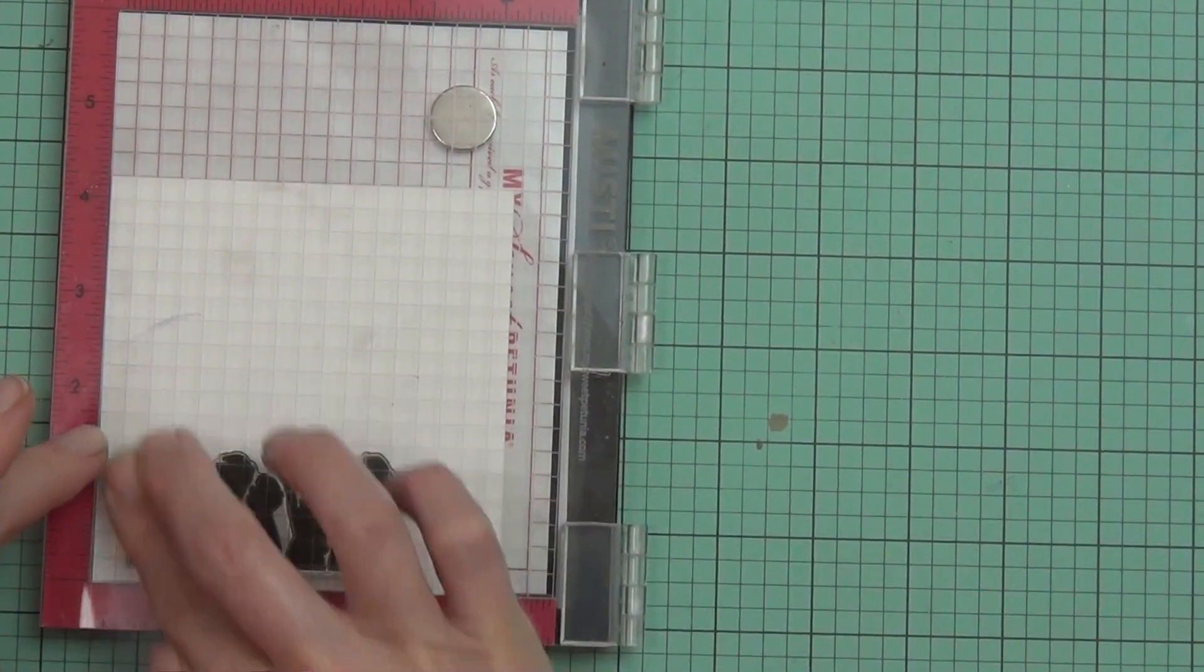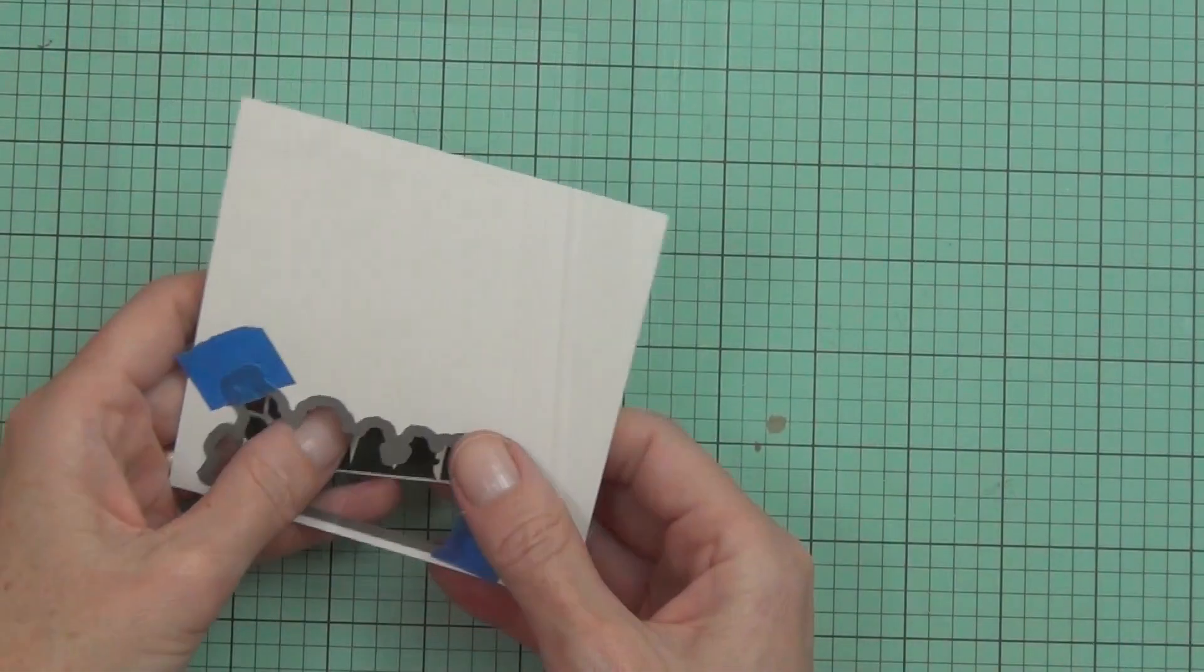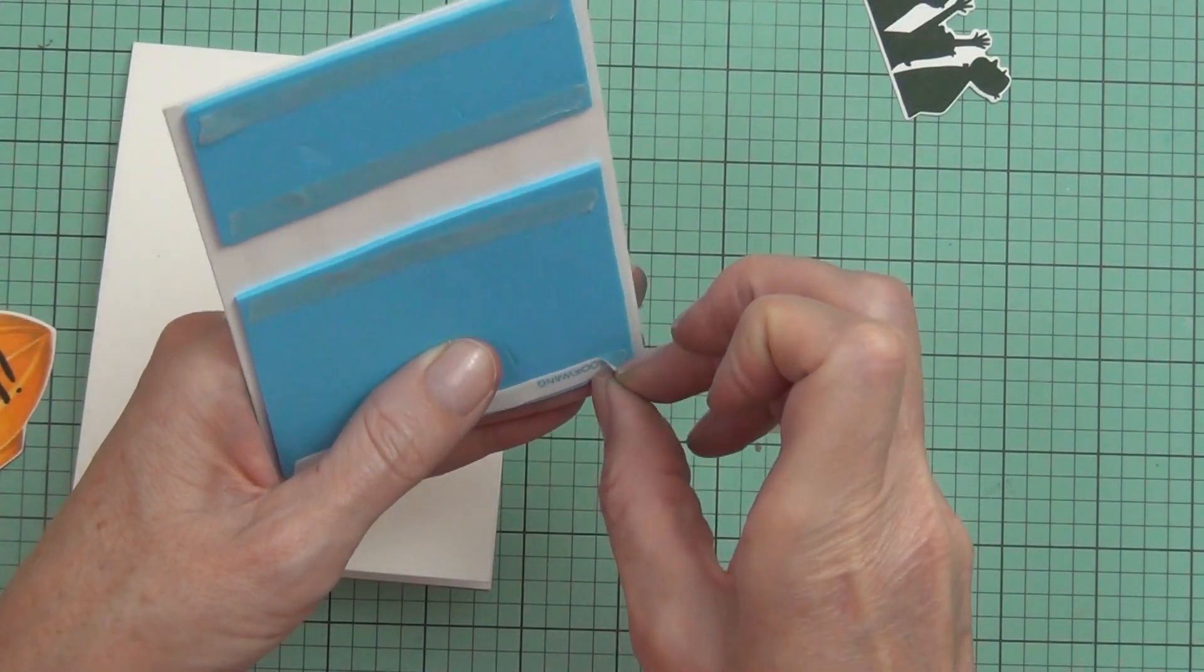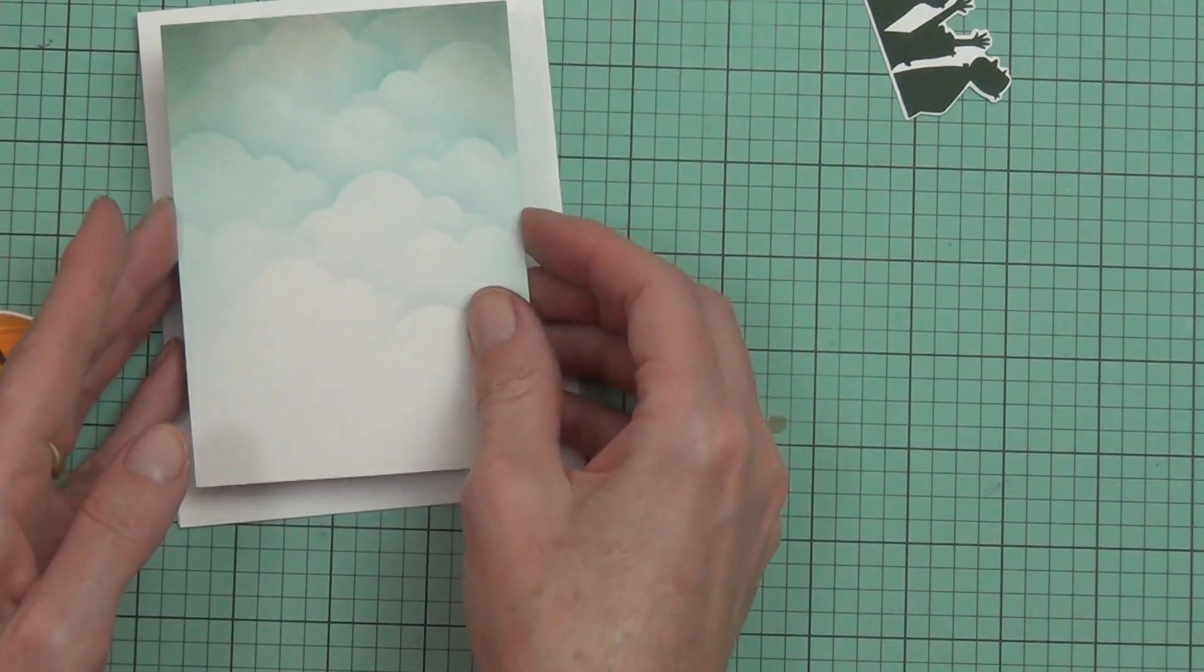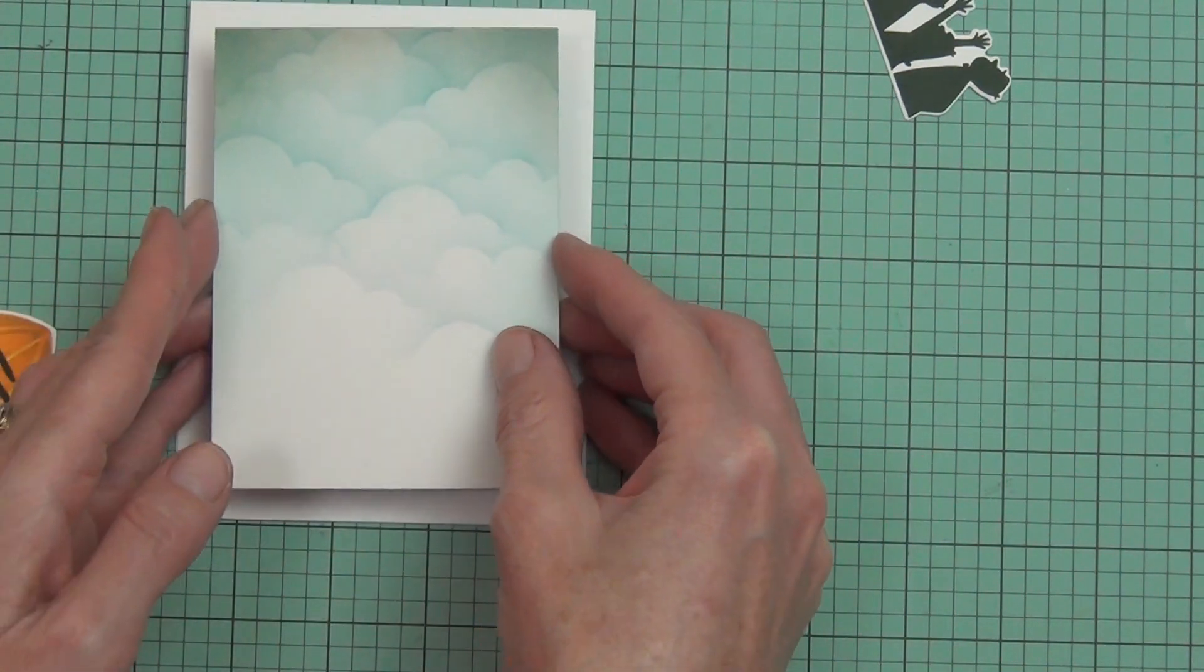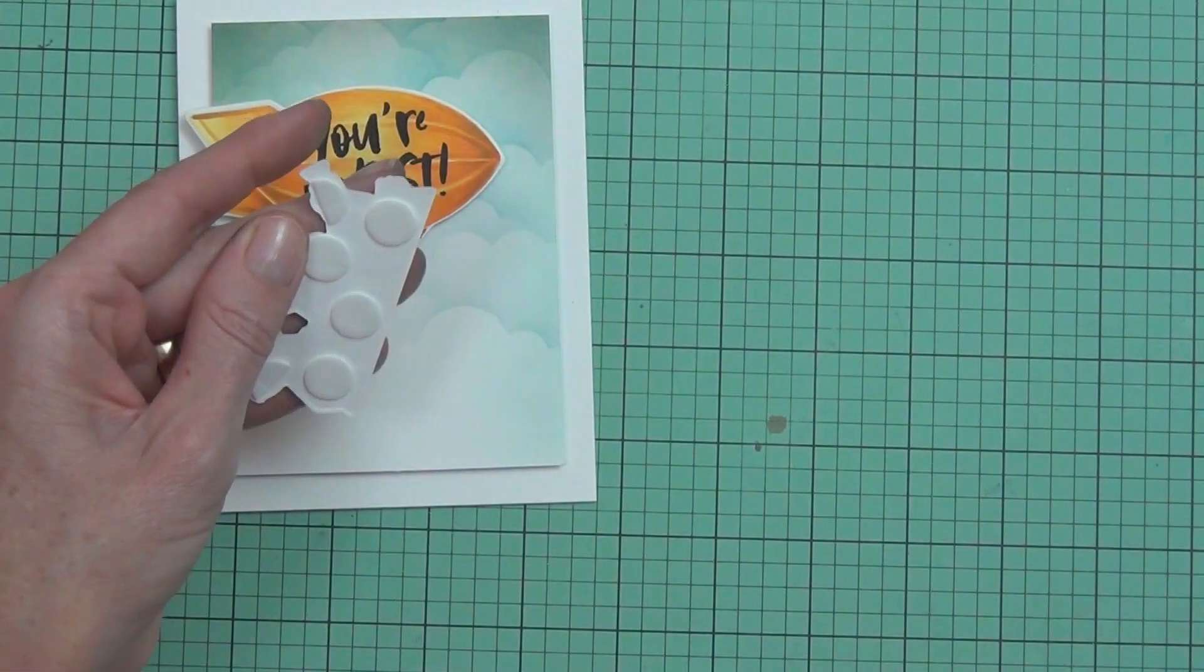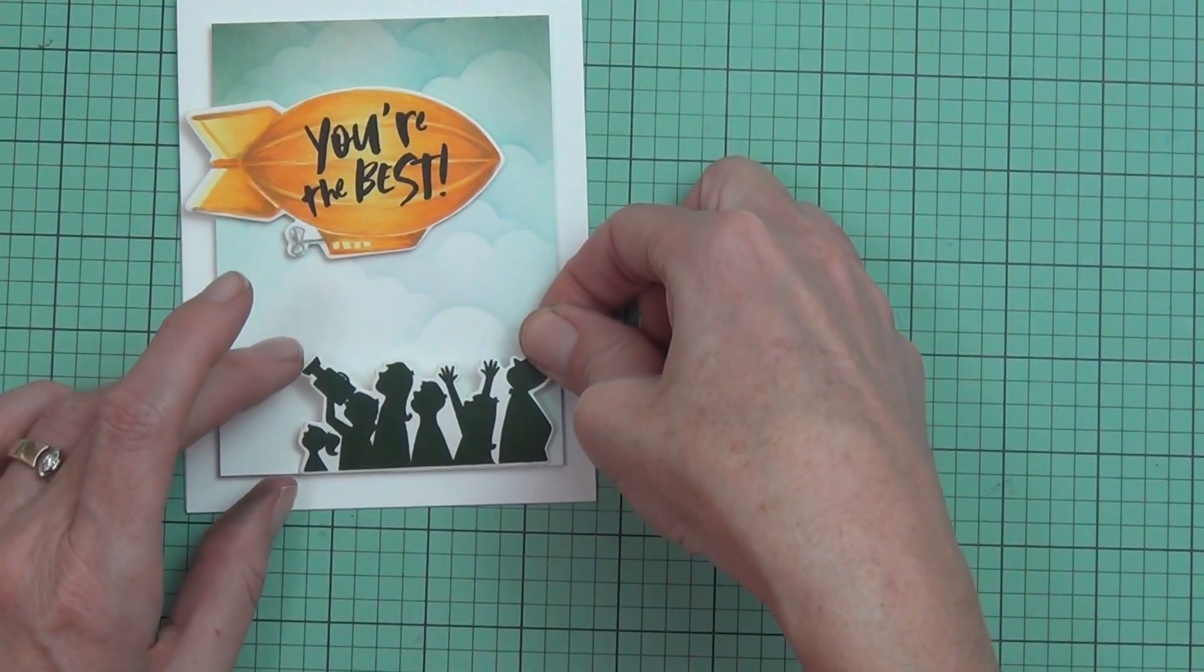I used the Spruce ink from Catherine Pooler to stamp out—I'm going to call them the Jetsons because to me they look like the Jetsons. They're a real retro family looking up at the balloon—airship, I should say. I've cut my panel down, added some foam to the back, and popped that up on the front of a top-fold card. I popped up my little crowd of the Jetsons and also popped up my blimp/airship with my sentiment on top.